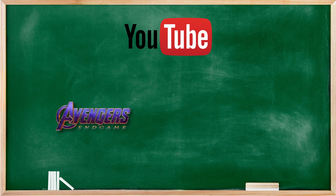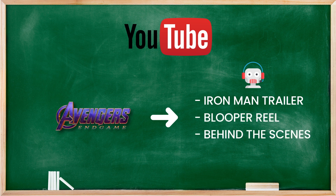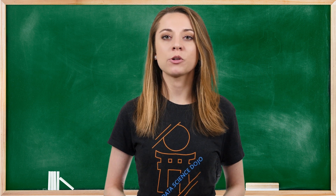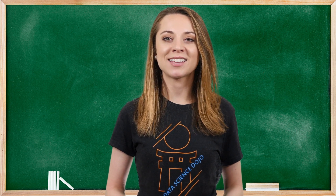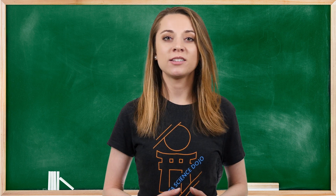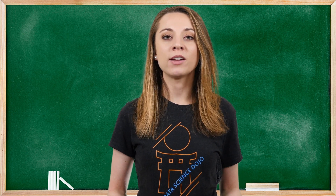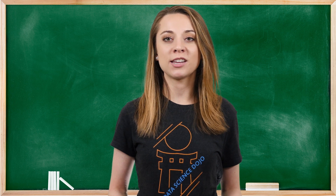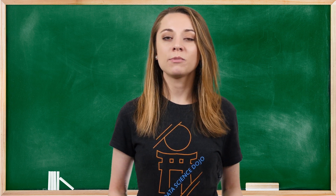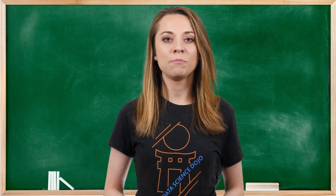If I watch a trailer for Avengers Endgame, I might be shown a trailer for Iron Man, or funny bloopers from filming the movie, or an interview with some of the actors. These algorithms are so smart that they are able to decide what to show us and can be scary accurate. It should also be noted that each company might have their own algorithm and way of generating recommendations, and that one company's method does not apply to all.